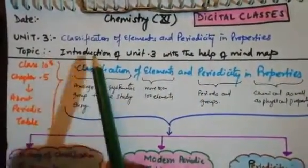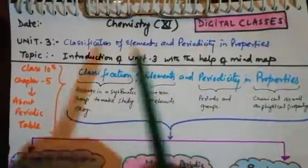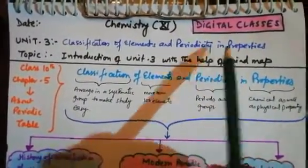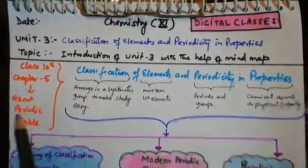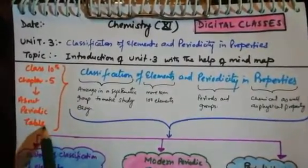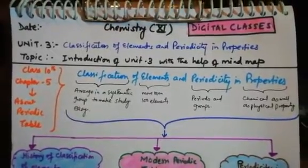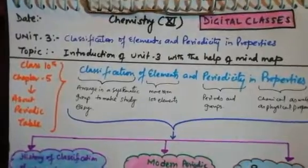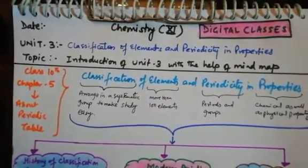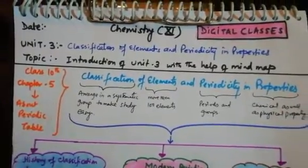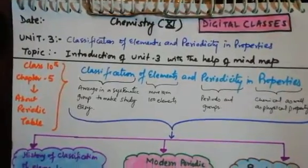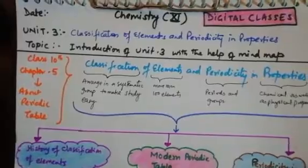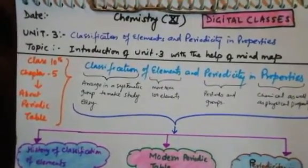We are going to start today: Classification of Elements and Periodicity in Properties. Today's topic is the introduction of Unit 3 with the help of a mind map. Let me remind you of Chapter 5 from Class 10, which was about the periodic table — the history, contributions of Dobereiner, Newlands, Mendeleev, Moseley, and Bohr to build the modern periodic table. This chapter is the backbone of chemistry and very important from a chemistry point of view.